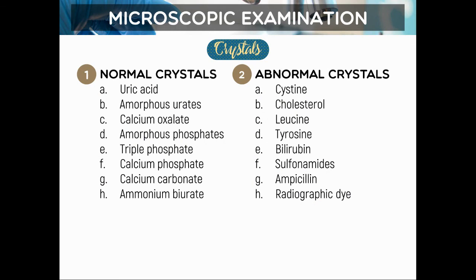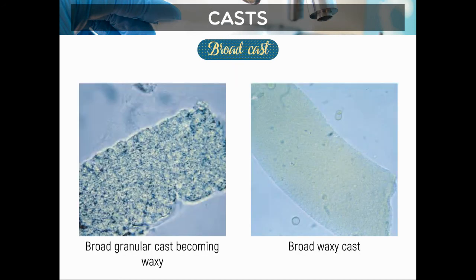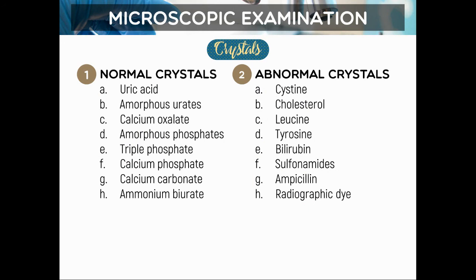To summarize the different types of casts: hyaline cast, cellular casts (RBC, WBC, bacteria), granular cast, and broad cast. Also worth noting is the mixed cast, which contains two types of materials inside — for example, RBCs and bacteria in the same cast. When reporting mixed casts, try to find additional fields to identify the dominant element. Now let us proceed to the crystals.